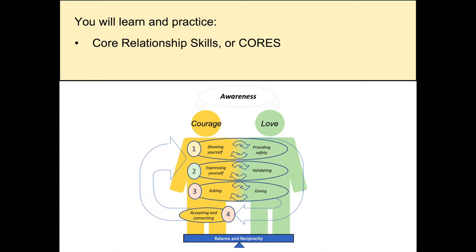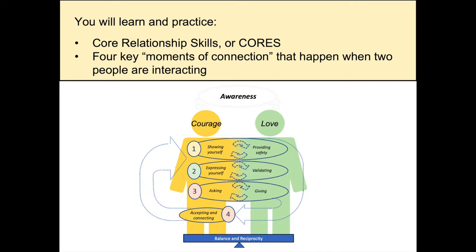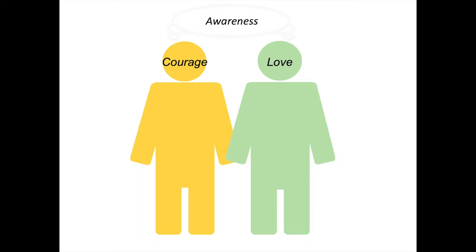This is what you will learn and practice over the course of this work. This model contains what we call our core relationship skills, or sometimes we just call them cores. Each of the terms in this model represents one core. The cores come together to describe four key moments of connection, and these moments of connection happen when two people are interacting. Overall, these skills describe how you can engage in an interaction with another person to create moments of connection that matter and help you improve the relationship.